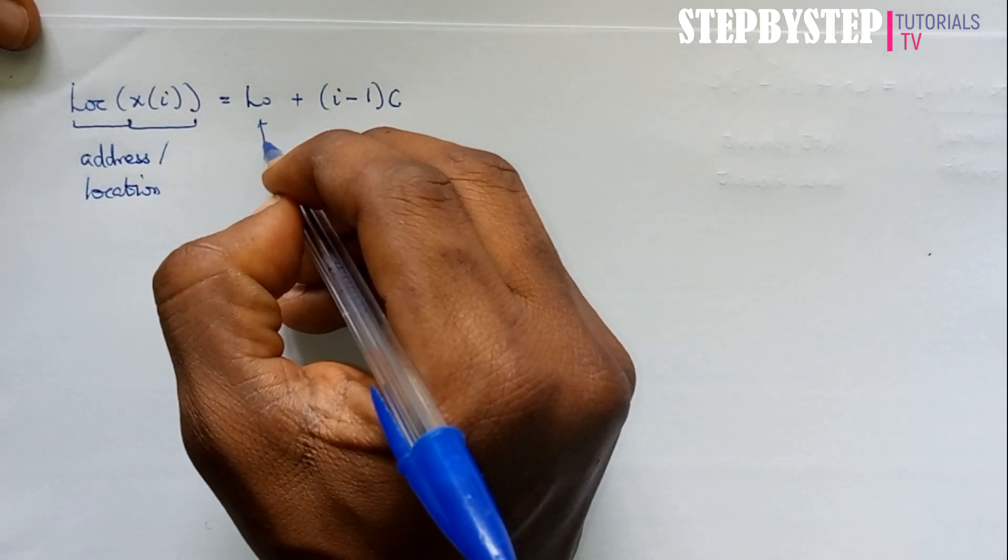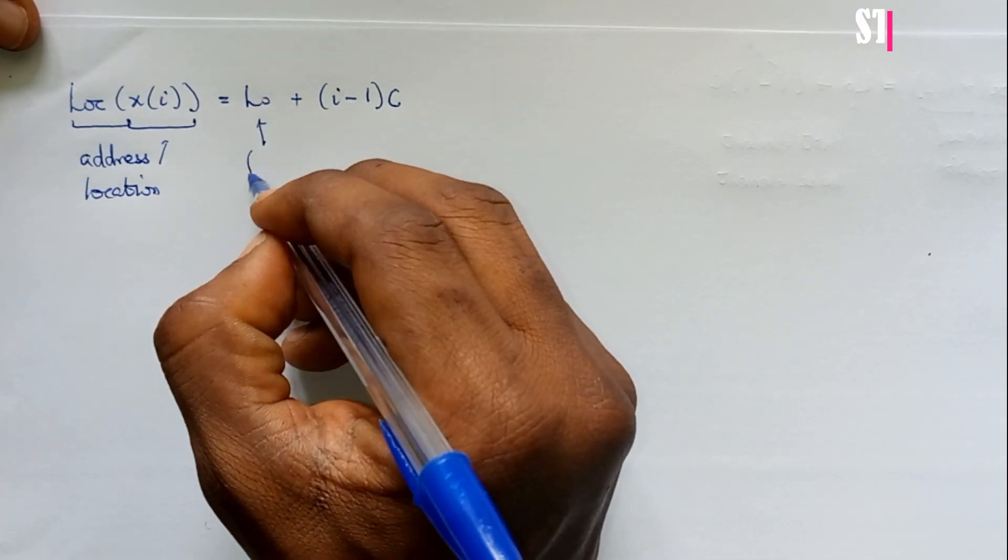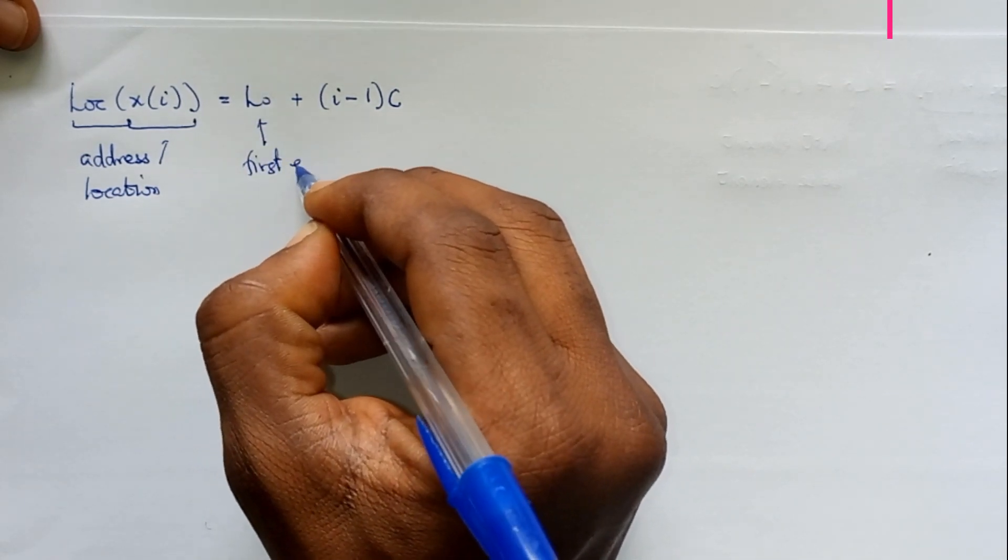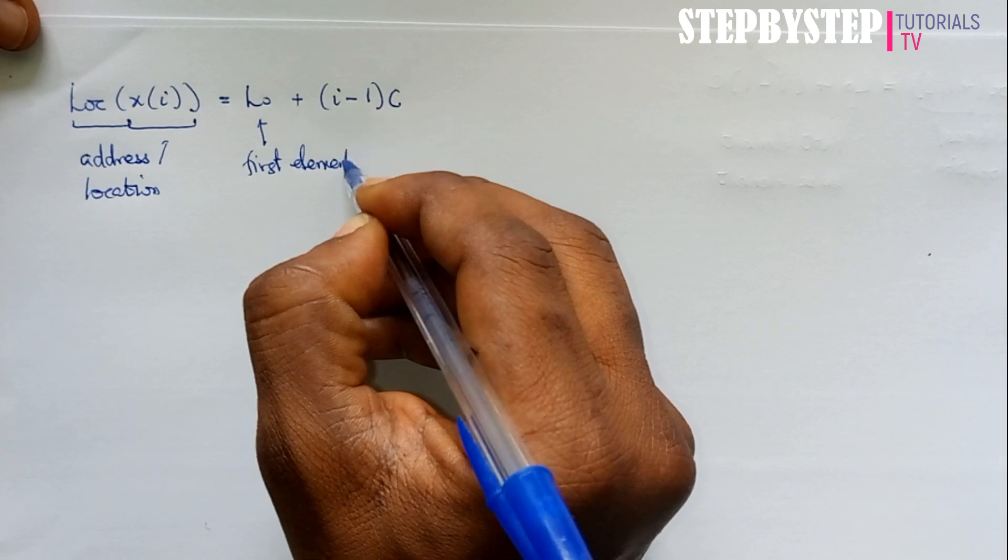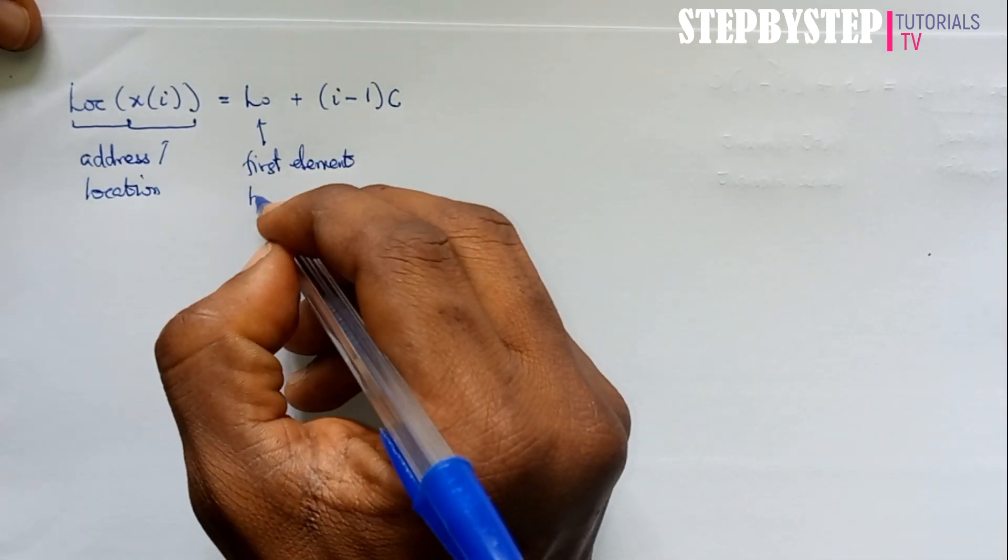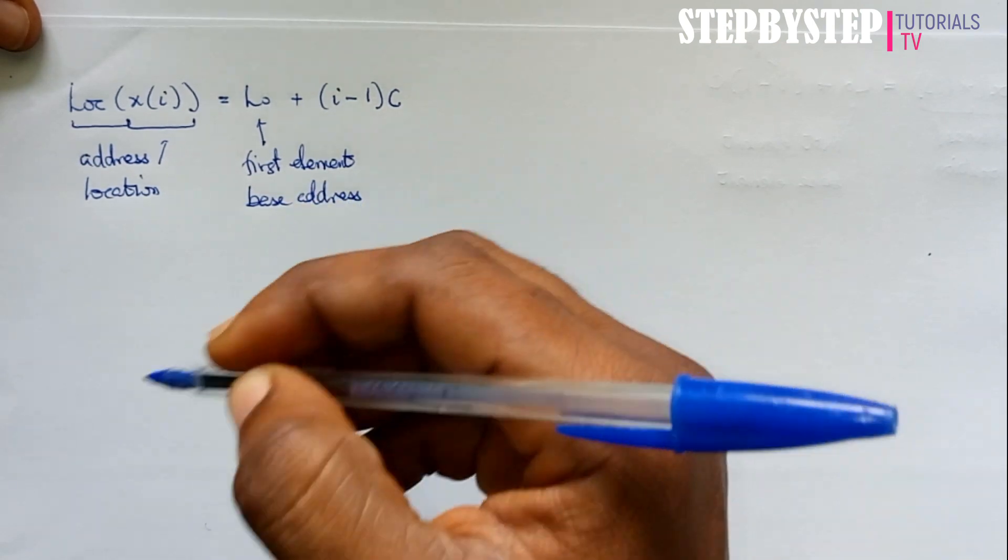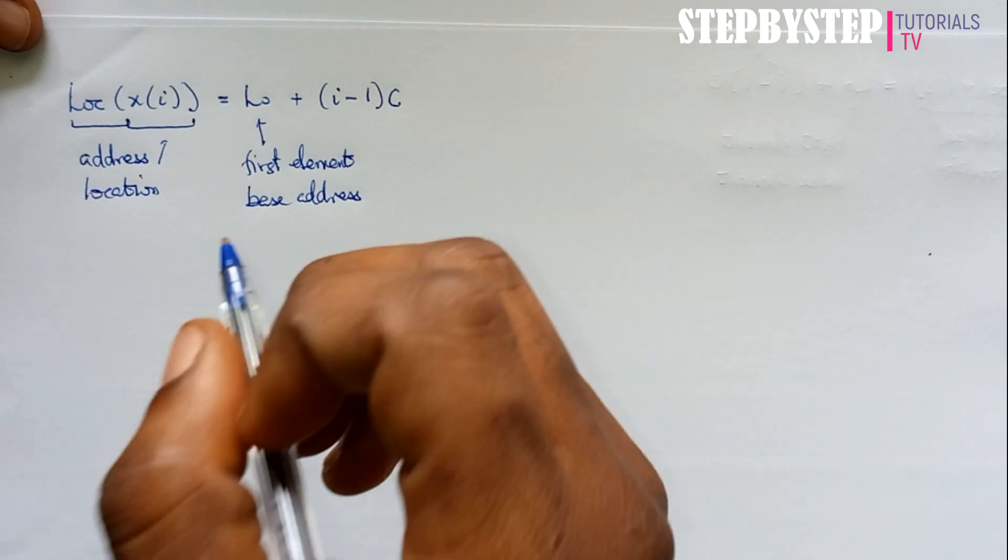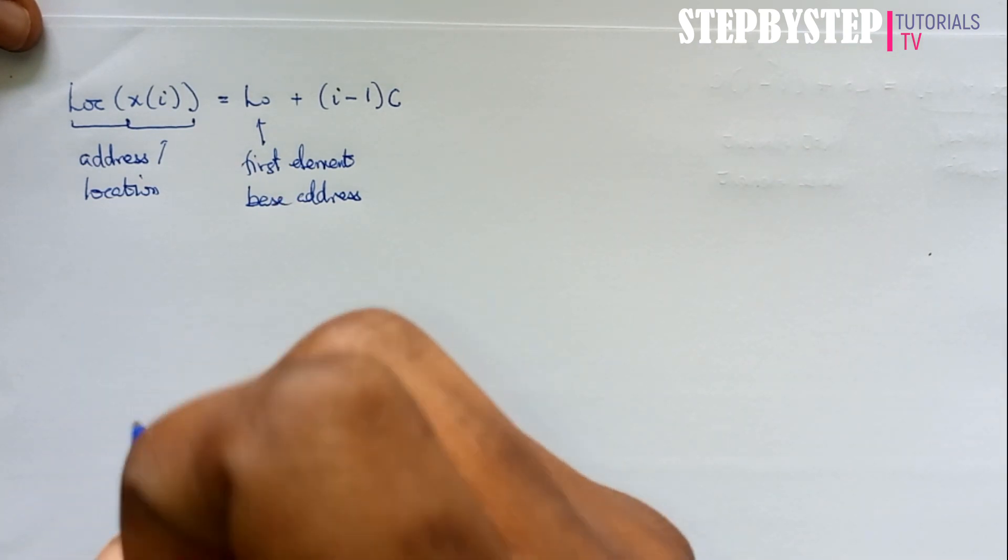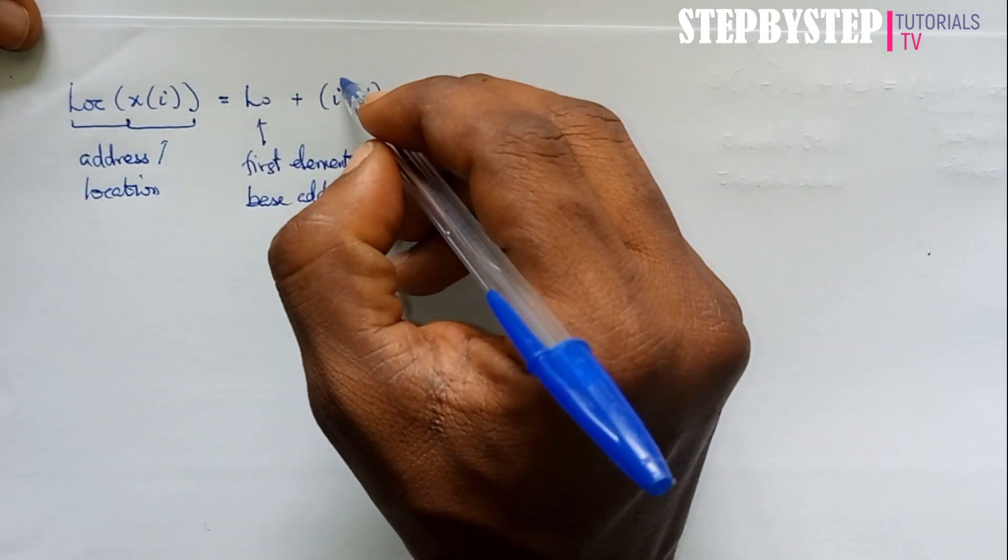LO represents our first element within the particular list. It can be called the first element, the base address, the first item, anything that indicates that this particular item is the initial element within the list.